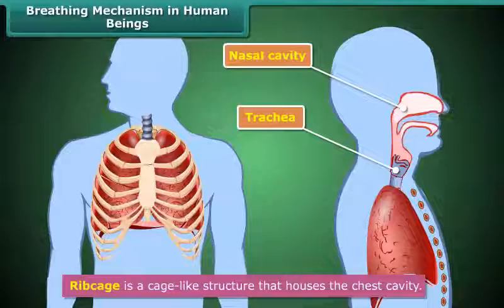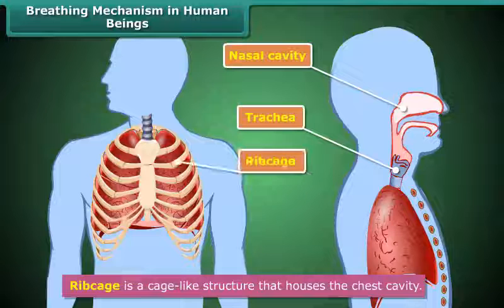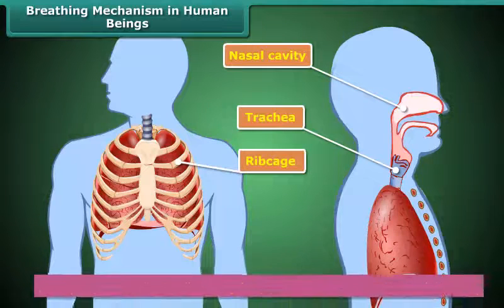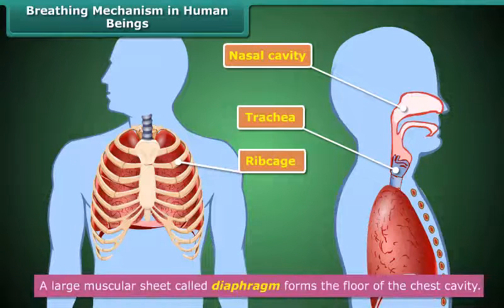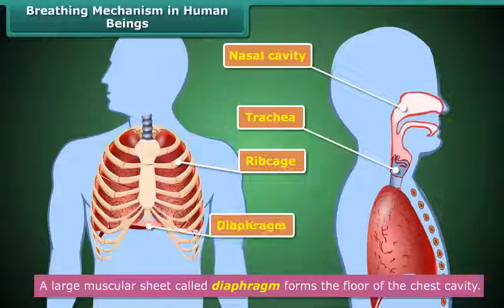These ribs form a cage-like structure called the ribcage. A large muscular sheet called the diaphragm forms the floor of the chest cavity. The ribcage and the diaphragm show movements during inhalation and exhalation.